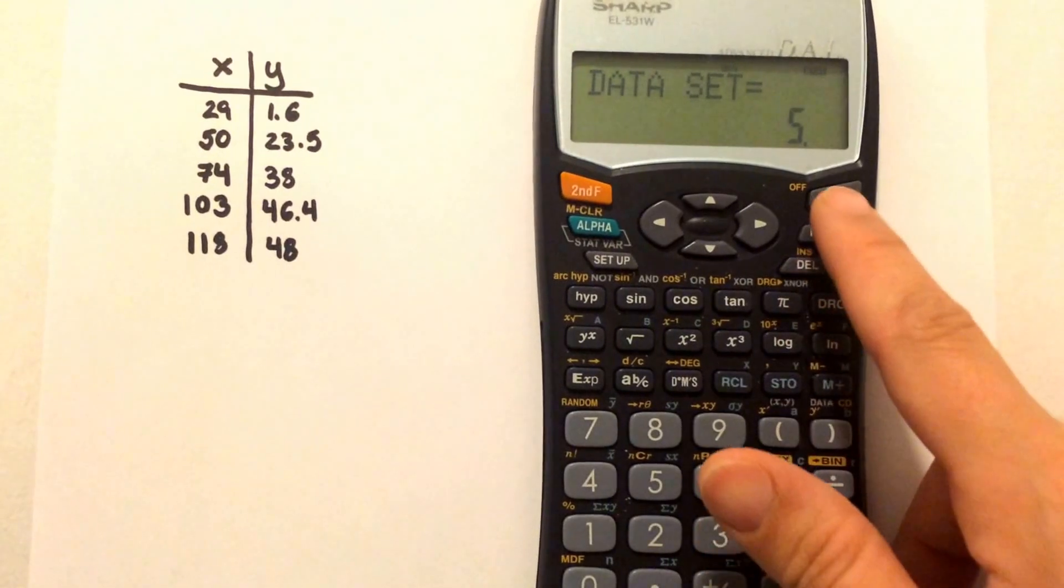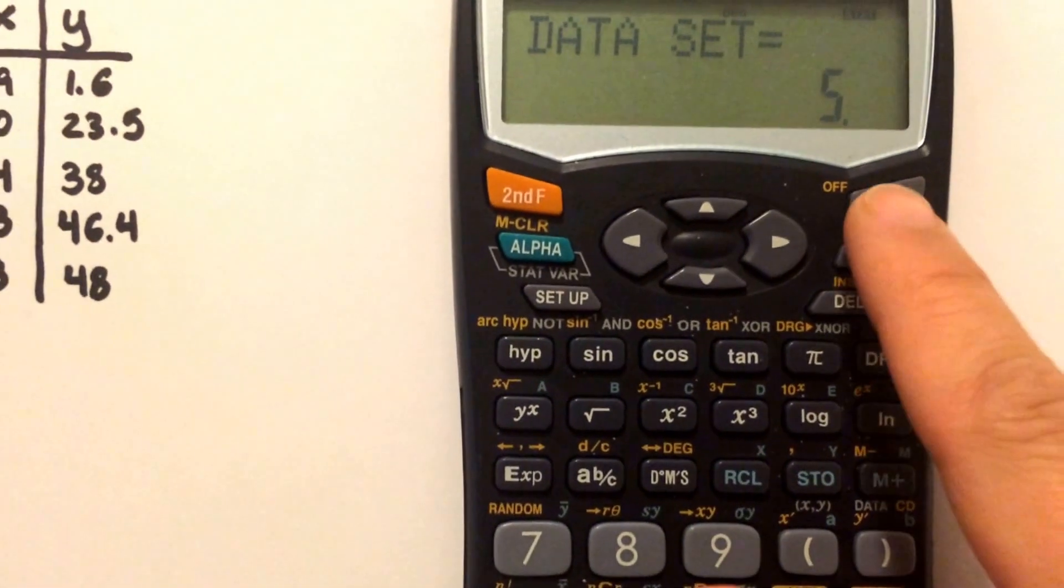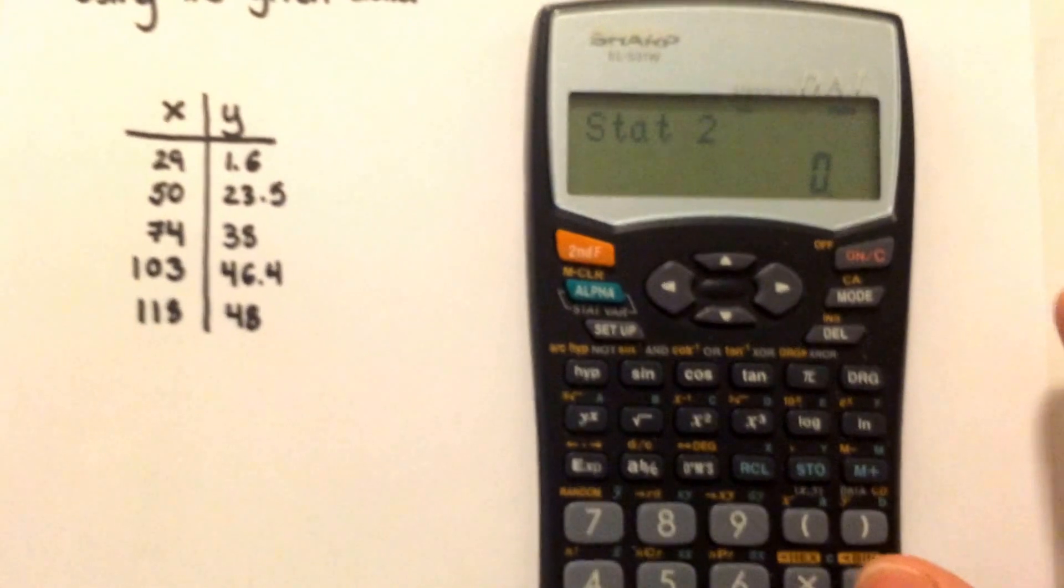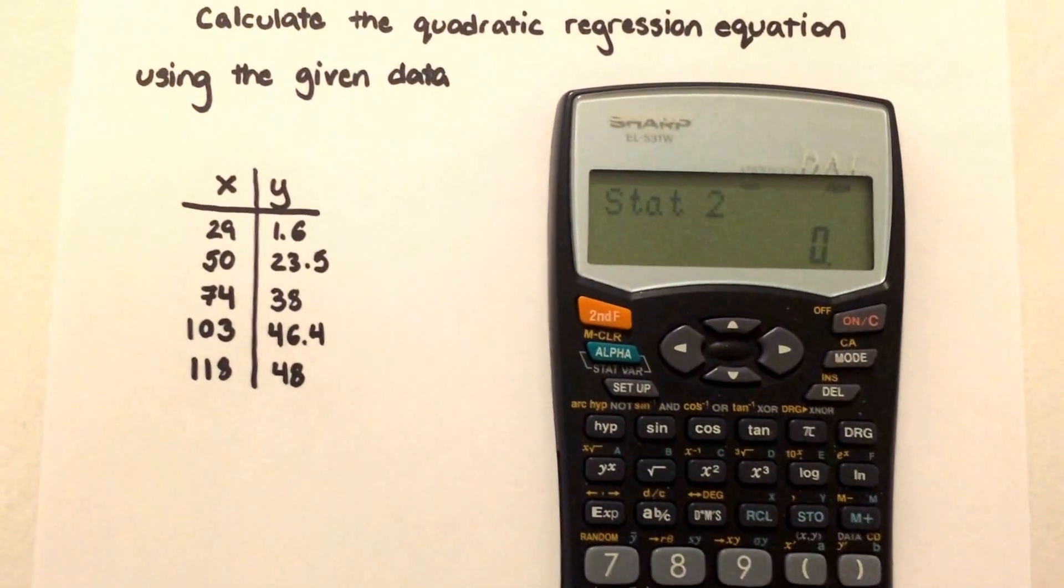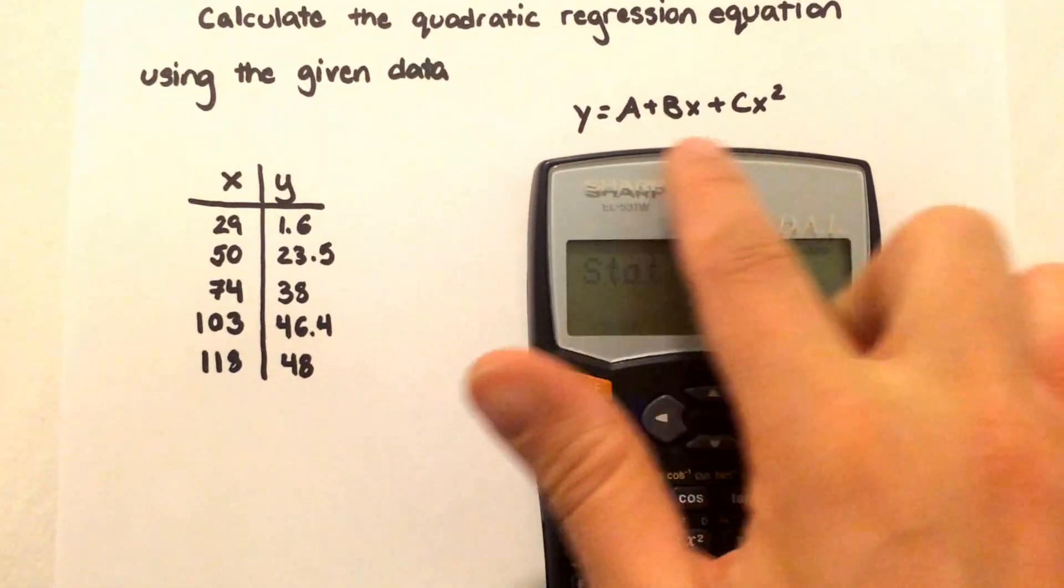Now I'm just going to hit the on-off just to clear. What you're going to do is you want to find out your A, B, and C value.